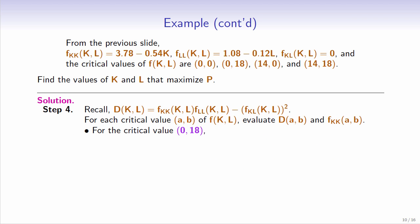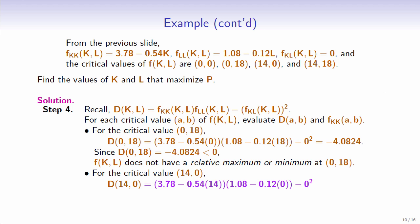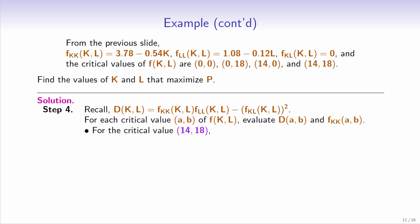For the critical value (0,18), d equals (3.78 minus 0.54 times 0) times (1.08 minus 0.12 times 18) minus 0 squared, which equals negative 4.0824. Since d is less than 0, f does not have a relative maximum or minimum at (0,18). For the critical value (14,0), d equals (3.78 minus 0.54 times 14) times (1.08 minus 0.12 times 0) minus 0 squared, which also equals negative 4.0824. Since d is less than 0, f does not have a relative maximum or minimum at (14,0).